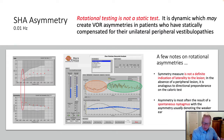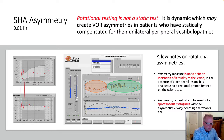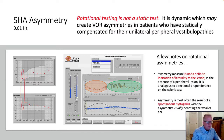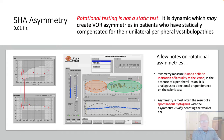Chair asymmetries, much like directional preponderances in caloric, are often the secondary result of spontaneous nystagmus, which usually indicates a unilateral lesion. You need to sort these things out. Recognize also that the rotational test isn't a static test, so any compensated static lesion may actually be brought out during rotational testing.